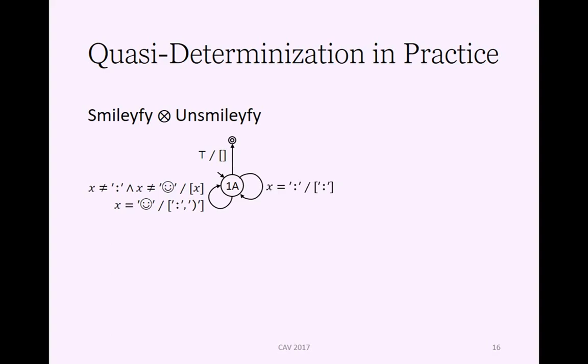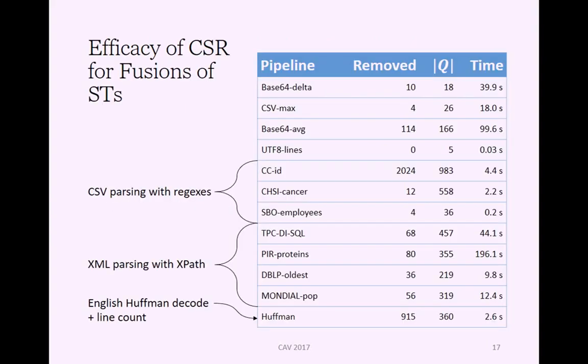So now we have the minimal number of control states, the same as Unsmileyfy. You might still notice one matter here that we have one transition more than Unsmileyfy had. We've minimized the ST on the automaton-theoretic side, but we still have the matter of what is the most efficient representation of the transitions on the modulo theory side of the symbolic automata and transducers. That's of course then theory specific how you do these minimizations, but that's another dimension to consider.